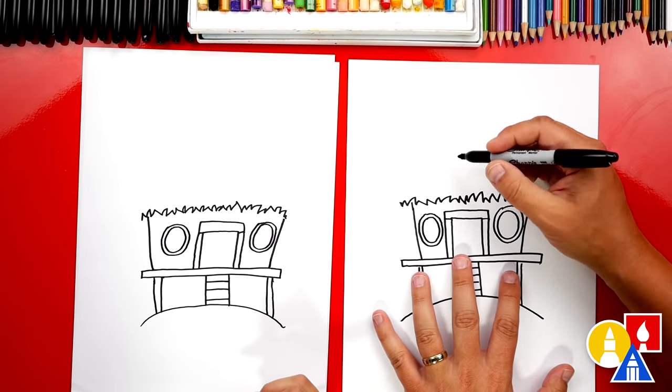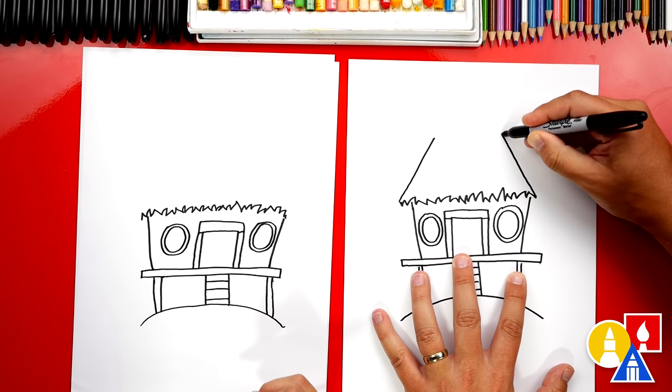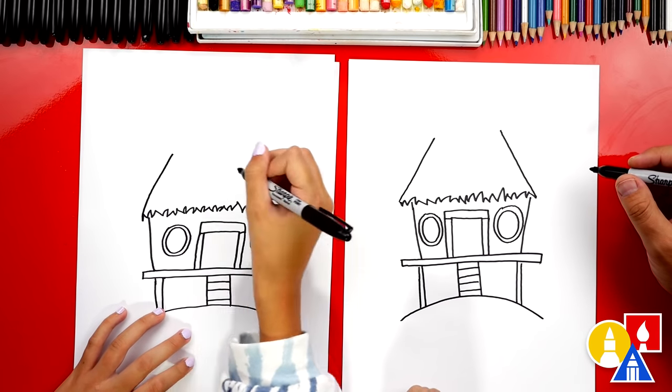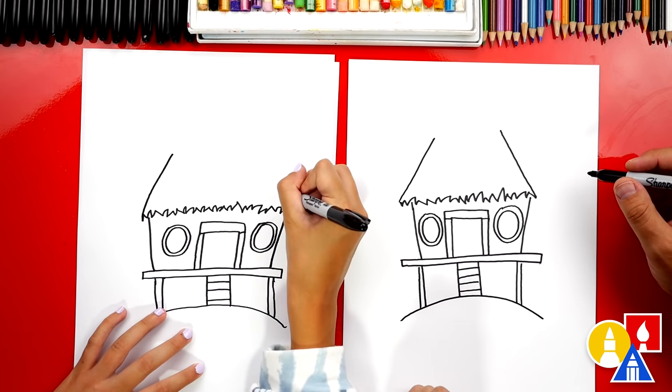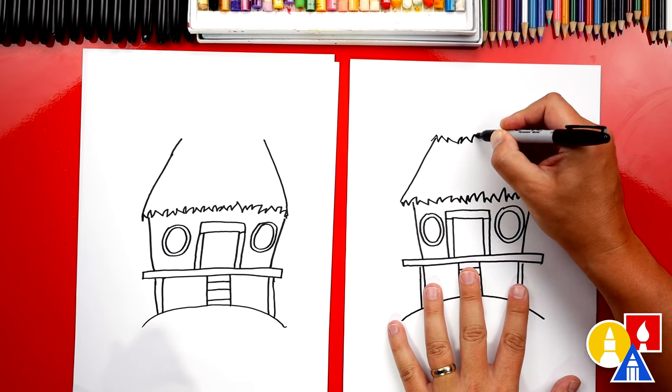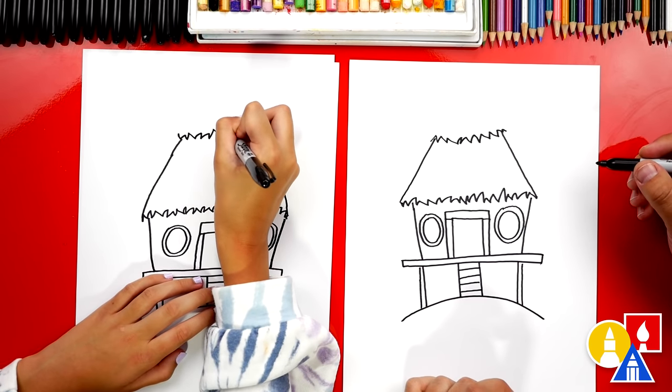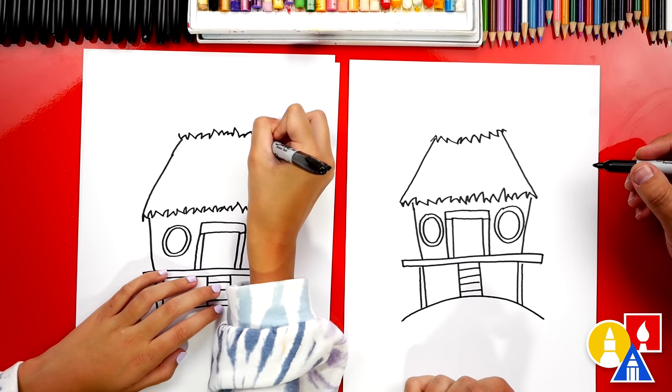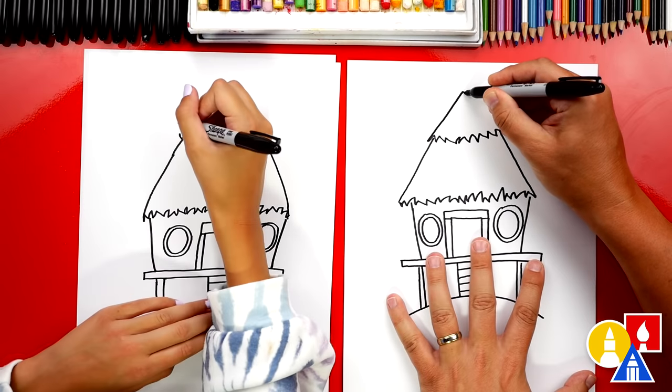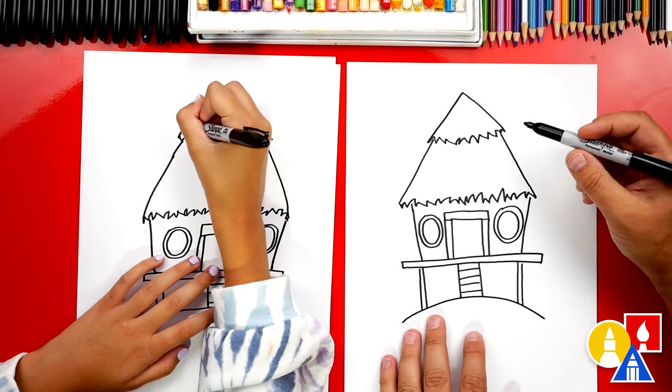Now let's finish our roof. I'm going to draw a diagonal line coming up on each side and it comes closer towards the top. Then let's draw another zigzag line connecting the top of those two lines together. And we can finish the top of our roof by drawing an upside down V. It kind of does look like a Christmas tree.